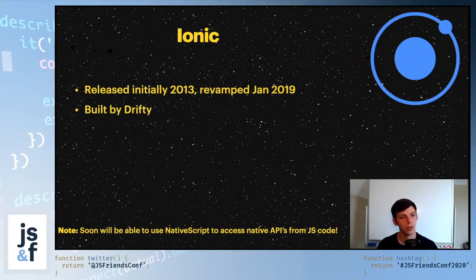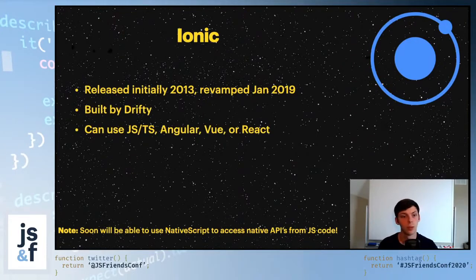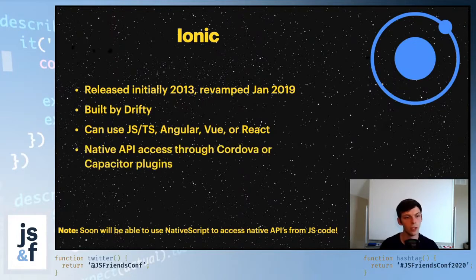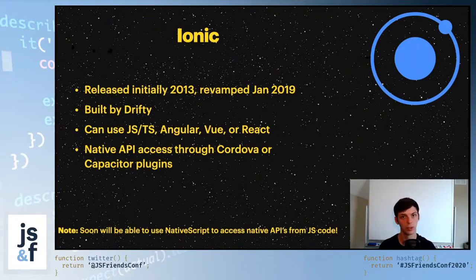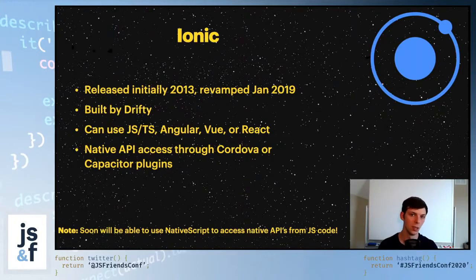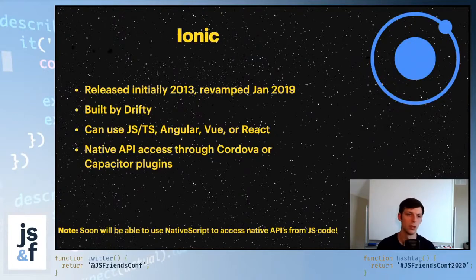Ionic was released in 2013 by Drifty, and with it you can use JavaScript, TypeScript, Angular, Vue, or React. You get native API access through Cordova or Capacitor plugins. Previously it was Cordova; now there's a side-by-side of Cordova and Capacitor, with the plan to move fully to Capacitor long-term. At Ionic Conf, it was announced that NativeScript is working with the Ionic team to bring NativeScript to Ionic — so NativeScript is now something you can use anywhere to get access to native APIs through JavaScript, which is a super cool thing.